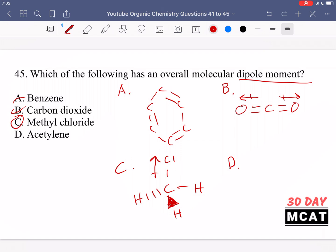Finally, option D, acetylene—that's another name for ethylene—which is two carbons bonded to each other. But they're carbons, the same element, so there is no overall dipole moment. Only C is the one which has a dipole moment which is not balanced out by anything else. Therefore, C has an overall molecular dipole moment.